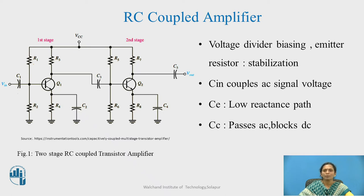Here CM couples the AC signal voltage and CE will provide the low reactance path. CE is the bypass capacitor. And the coupling capacitor CC passes AC signal and blocks the DC signal.